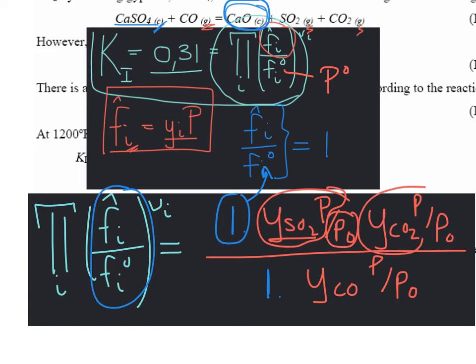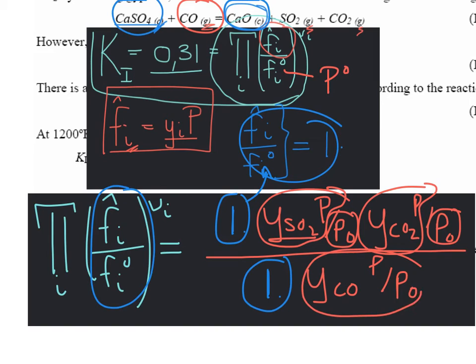For the reactants, calcium sulfate, this ratio is equal to 1 and then the ideal gas analogy for our carbon monoxide.